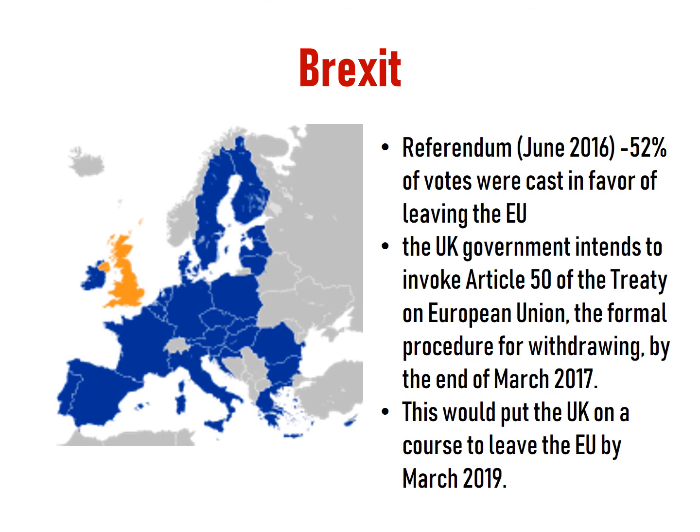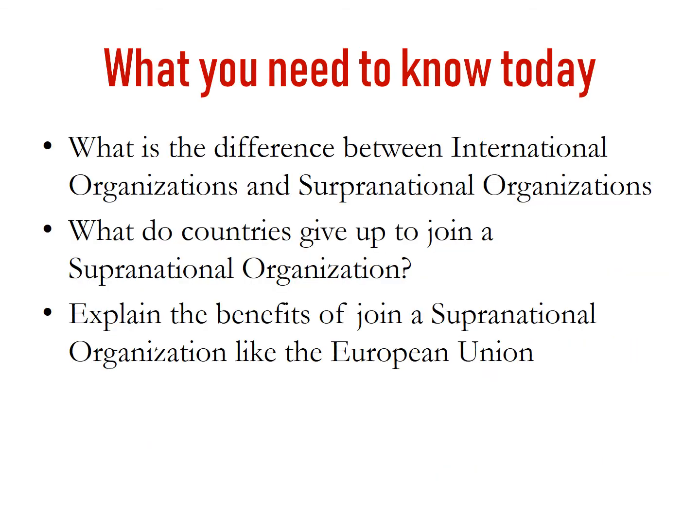We'll talk more about Brexit and the first country to ever leave the EU — it's still going on and has been happening over the past three or four years. So what do you need to know today? A lot was thrown at you in this seven minutes, but essentially you have to know the difference between international organizations and supranational organizations, understand what countries give up to join a supranational organization, and explain some of the benefits of joining one like the European Union. We'll explore more in class. If you had any questions during this video, write them down in your notebook so you can bring them up in class. Have a great day — we'll see you next time.